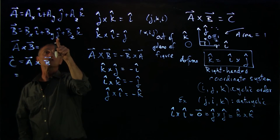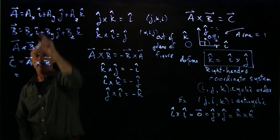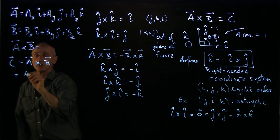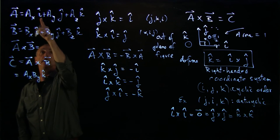i hat cross j hat. That's cyclic. i j is plus k hat. So our first non-zero term is ax by k hat, i hat cross j hat.